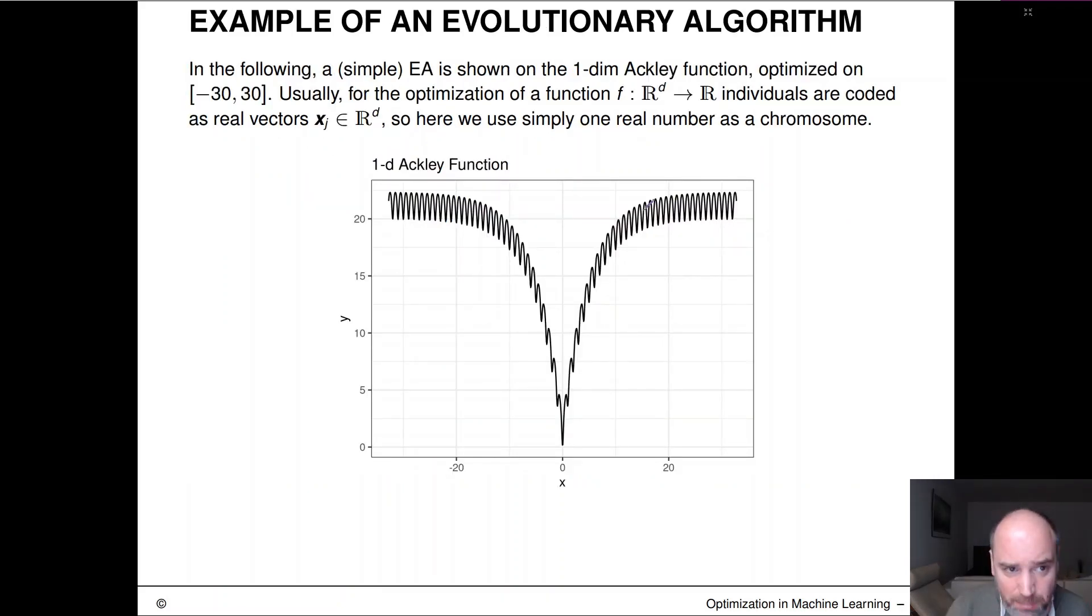Here's now a very simple example to kind of get a feeling for how this looks like. So we have created this here in 1D, which is maybe even a bit too simplistic, but I guess maybe it's a good idea for our first EA. And we'll also only use this with mutation and not with recombination. So you can see here the mathematical test function, which is called the Ackley function.